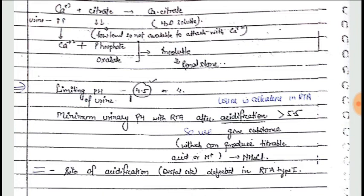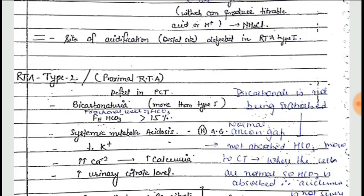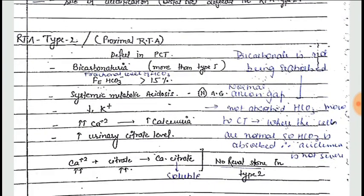The limiting pH of urine is normally 4.5, but in Type 1 renal tubular acidosis the minimum urinary pH after acidification remains more than 5.5. To make the urine acidic, we give a substance like NH4Cl. The site of acidification will be the distal tubules.